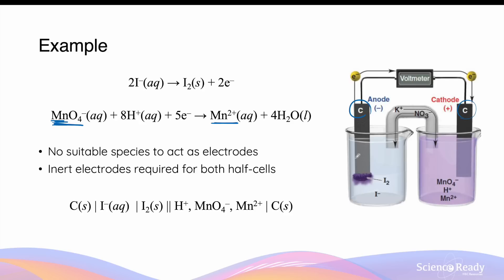The graphite submerged in the oxidation half cell is the anode, and the graphite submerged in the reduction half cell is the cathode. When the iodide ions lose electrons to form iodine solid, these electrons conduct through the graphite anode, flow from the anode to the cathode on the right-hand side, and accumulate in the graphite cathode. While the electrons accumulate there, the permanganate ions in solution are reduced by gaining these electrons to form manganese 2+ ions.